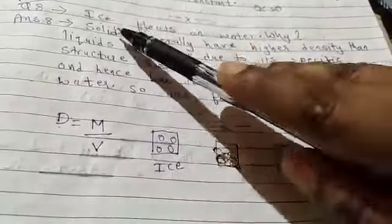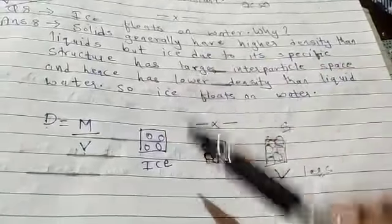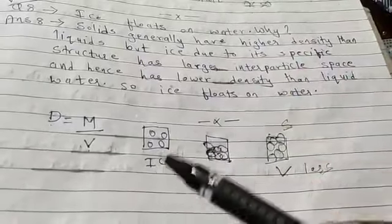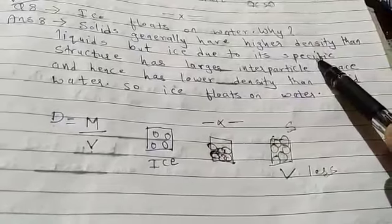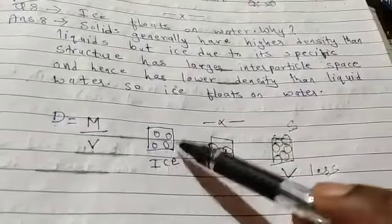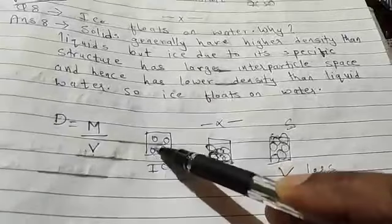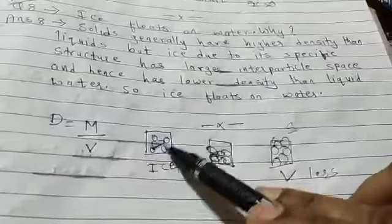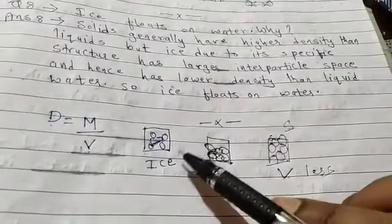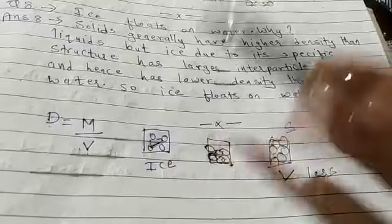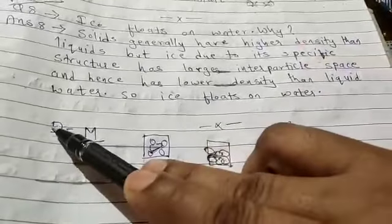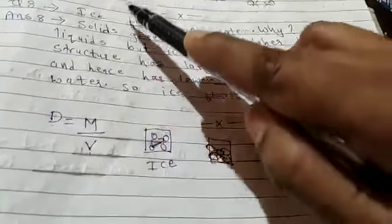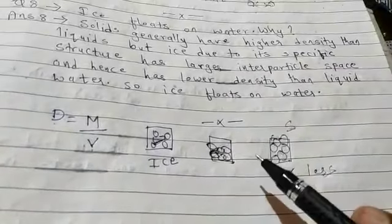Ice is also a solid, but it floats on water — it doesn't sink. Ice is a solid, but it has lower density. It should have higher density, but it has lower density. Why? Due to its specific structure, there is large inter-particle space in ice, so the volume occupied is more. When volume is more, density is lower. So as the density of ice is lower, it floats on water.